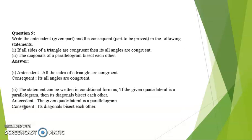Question number 9: write the antecedent (given part) and the consequent (part to be proved) in the following statements. First: if all sides of a triangle are congruent then its all angles are congruent. Antecedent: all sides of a triangle are congruent. Consequent: all its angles are congruent.